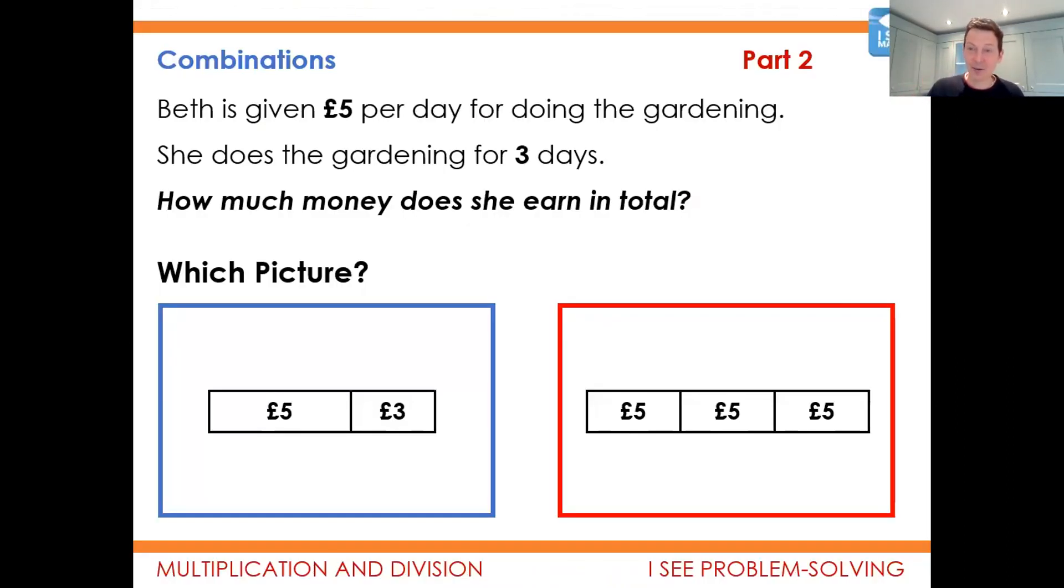That led into the worked example, the second part, where we have a look at this. Beth is given five pounds a day for doing the gardening. She's just gardening for three days. And the children have to discern between, is this an additive structure or is it a multiplicative structure, and discern between the two pictures.